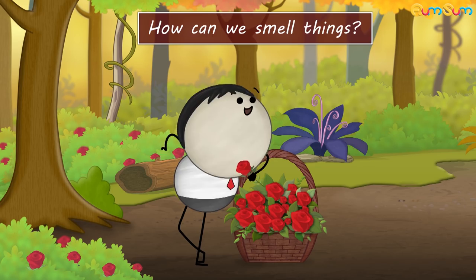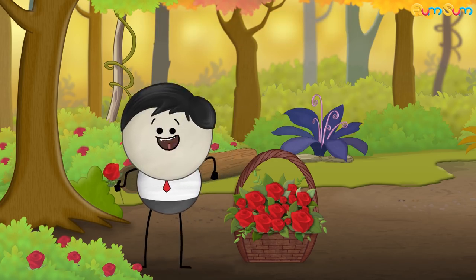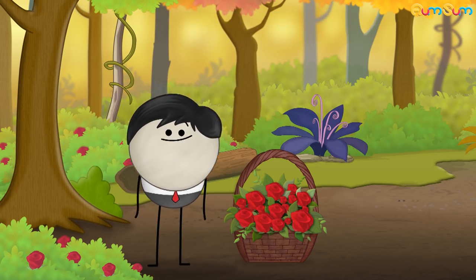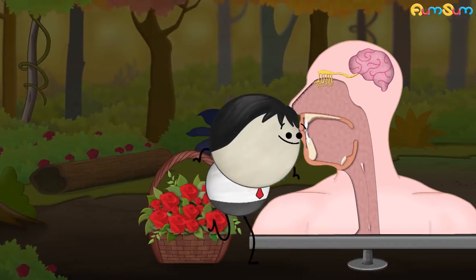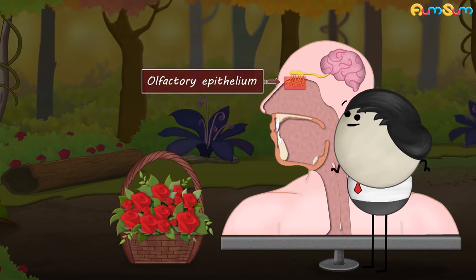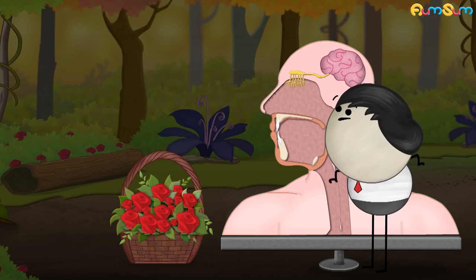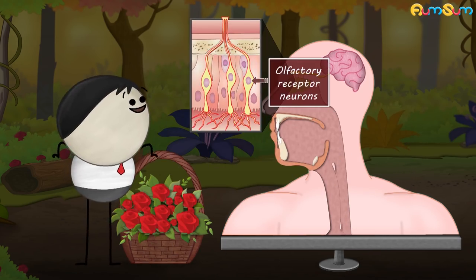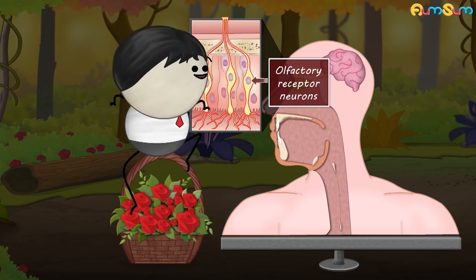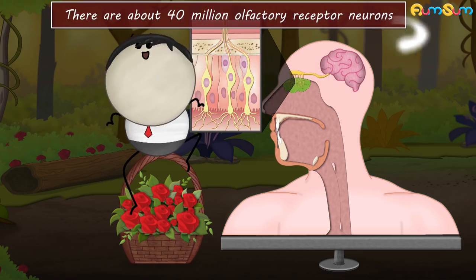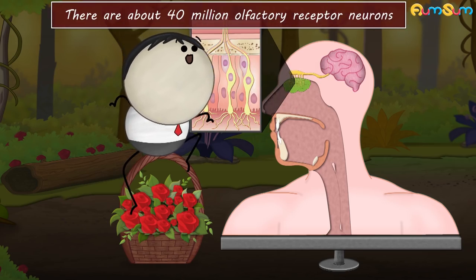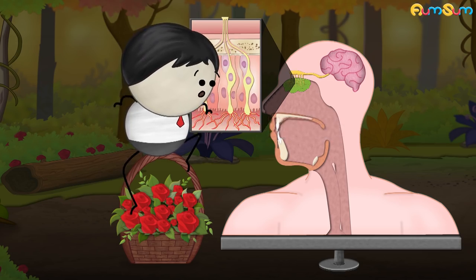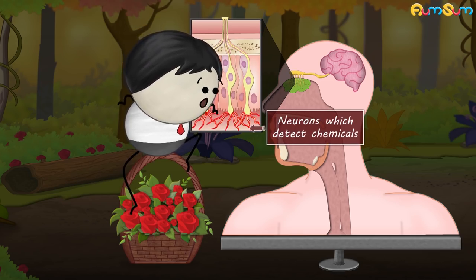How can we smell things? At the back of our nose, there is a tissue called olfactory epithelium. It is covered with mucus. This tissue has specialized neurons called olfactory receptor neurons. There are about 40 million olfactory receptor neurons. These neurons are chemoreceptors — that is, neurons which detect chemicals.